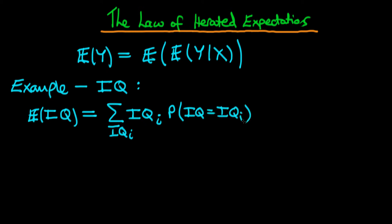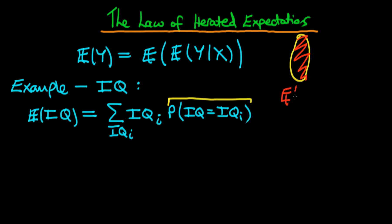In other words, this probability — this second quantity — is the proportion of the population who have that particular value of IQ. So what we're doing is taking the population as a whole and computing a weighted average of IQ across the entire population. In other words, we're taking the unconditional expectation of IQ. That's one way of working out the average level of IQ within a population.